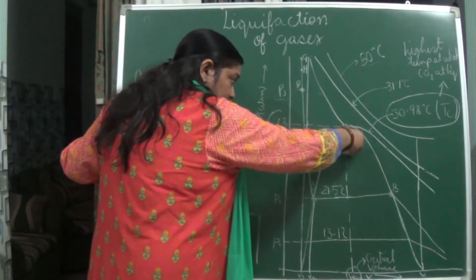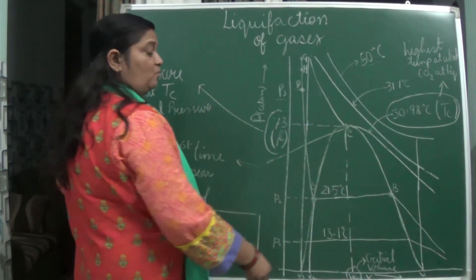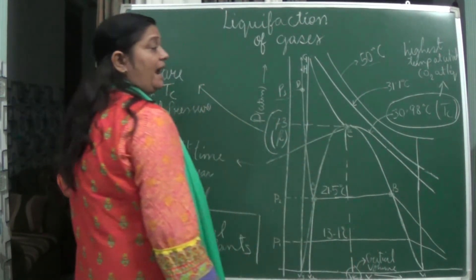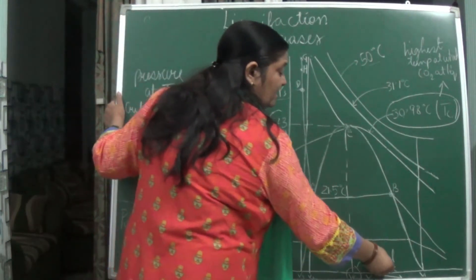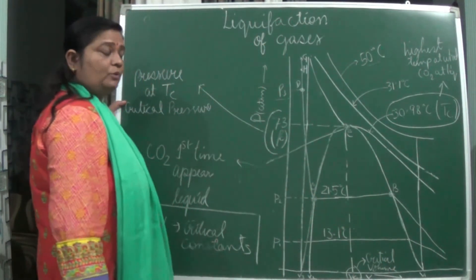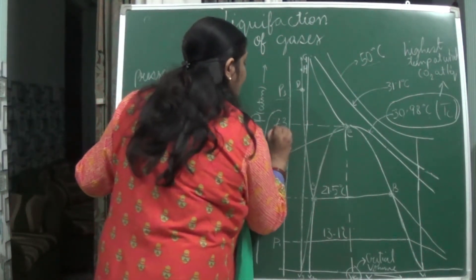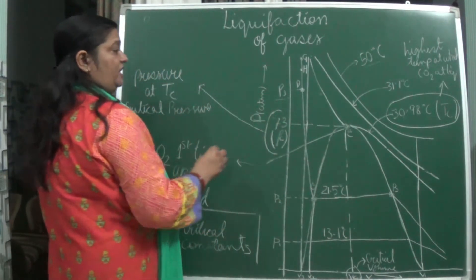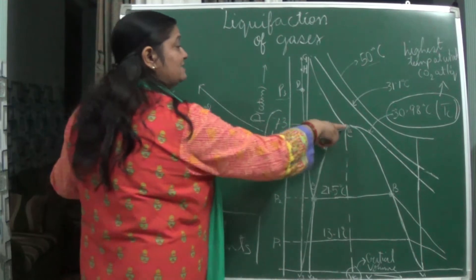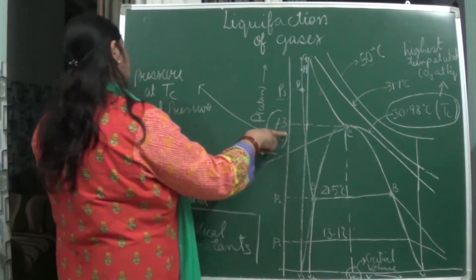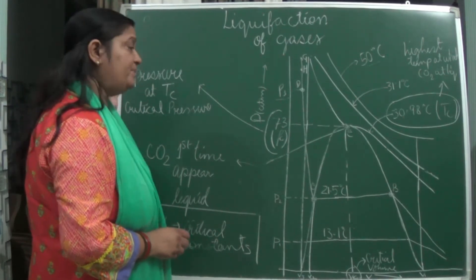The volume calculated at this critical temperature for one mole of gas is known as critical volume. At 73 atmospheric pressure it is being liquefied, so the pressure at critical temperature is known as critical pressure.